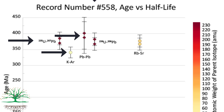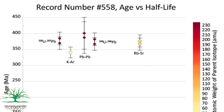This is the Uranium-238 to Lead-206 system. And this one is rubidium-to-strontium. The first isotope is always the parent product; the last one is always the daughter product. When the same colored shape is duplicated, it means that the same system was used twice.